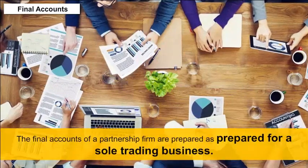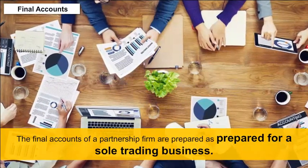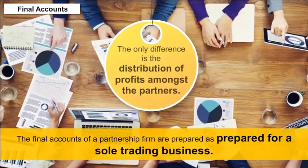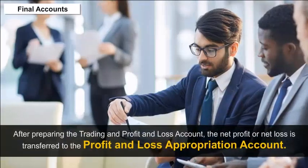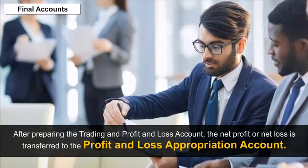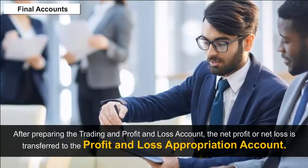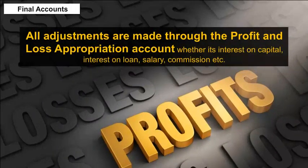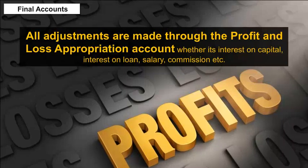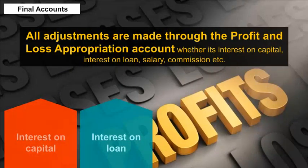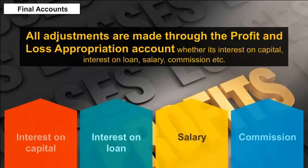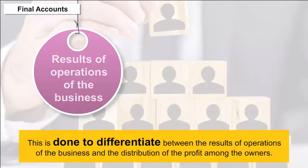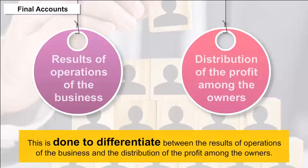Final Accounts: The final accounts of a partnership firm are prepared similarly to those for a sole trading business, with the only difference being the distribution of profits amongst the partners. After preparing the trading and profit and loss account, the net profit or net loss is transferred to the profit and loss appropriation account. All adjustments — whether interest on capital, interest on loan, salary, commissions, etc. — are made through the profit and loss appropriation account. This is done to differentiate between the results of operations of the business and the distribution of profit among the owners.